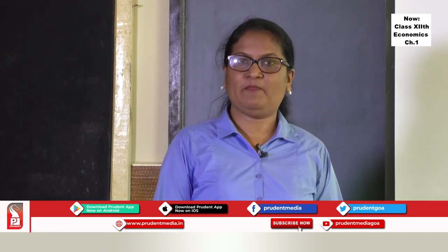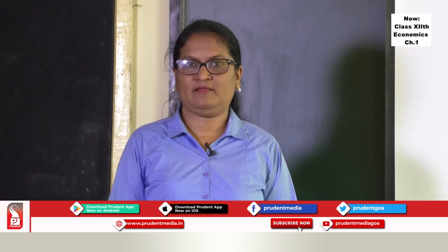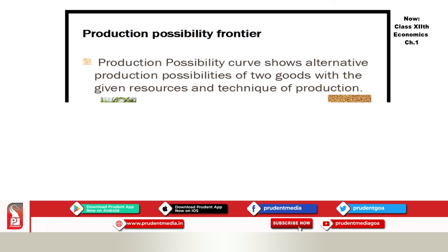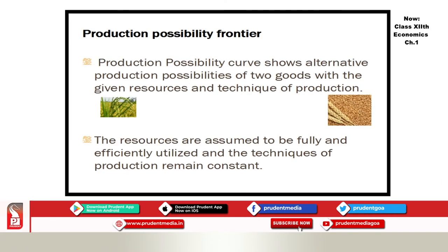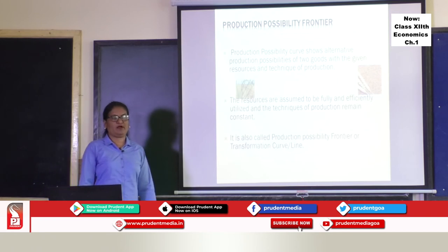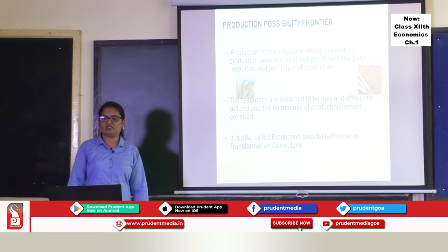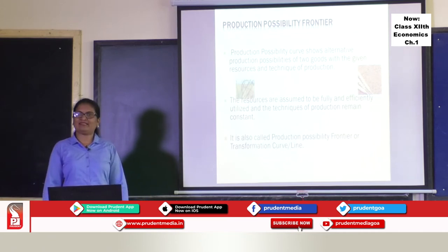Students, this is an important question — you have to learn it for the examination; it is a three marks question. Now let us take up the production possibility frontier — this is a five marks question. In this question, you have to answer the statement, the table, the diagram, and the explanation. The statement of the production possibility frontier: it is a curve showing alternative production possibilities of two goods with the given resources and the techniques of production.